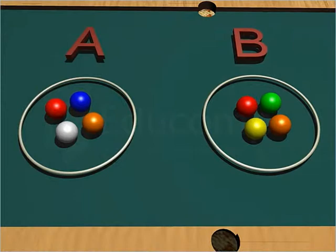Thus, if you find the Union of two sets, it consists of red, white, orange, blue, yellow and green balls. Notice that the balls common to the two sets are included only once in the combined set.